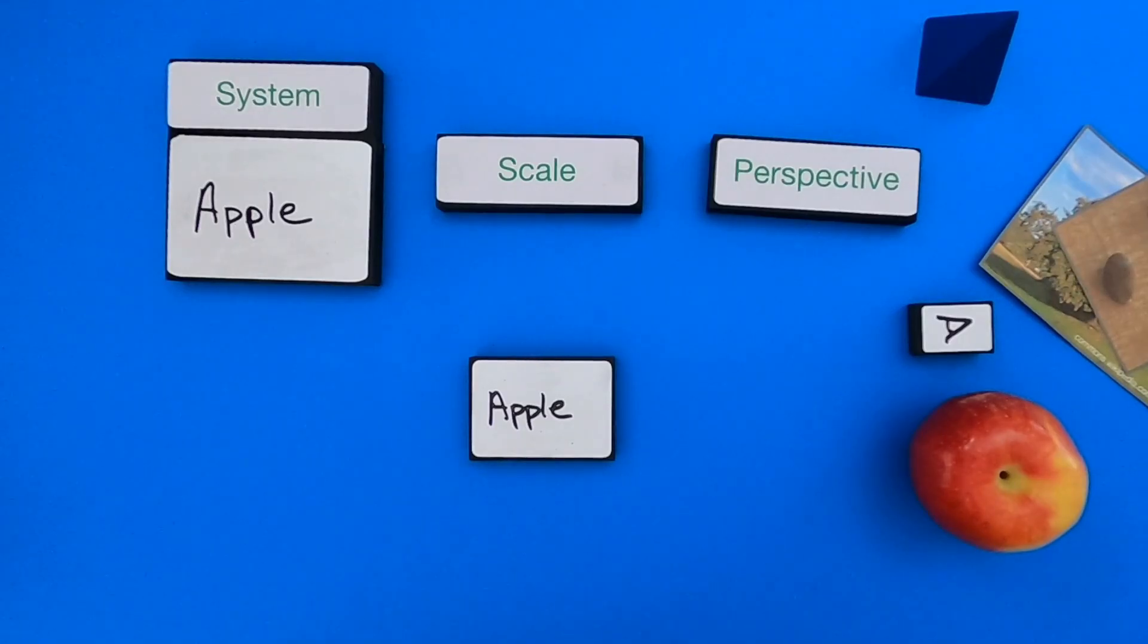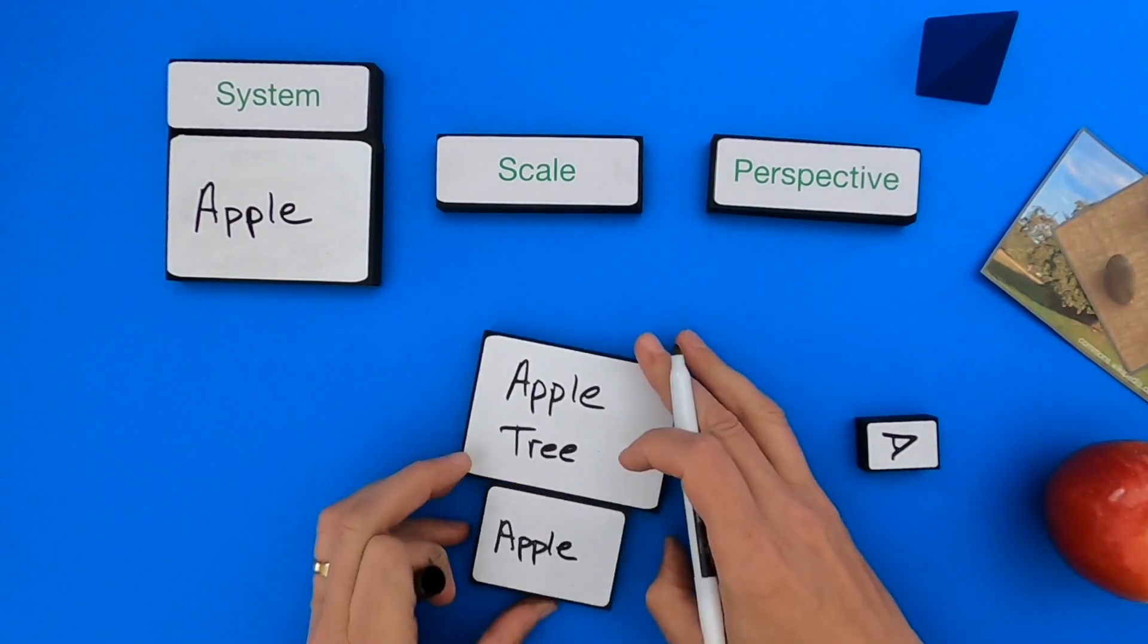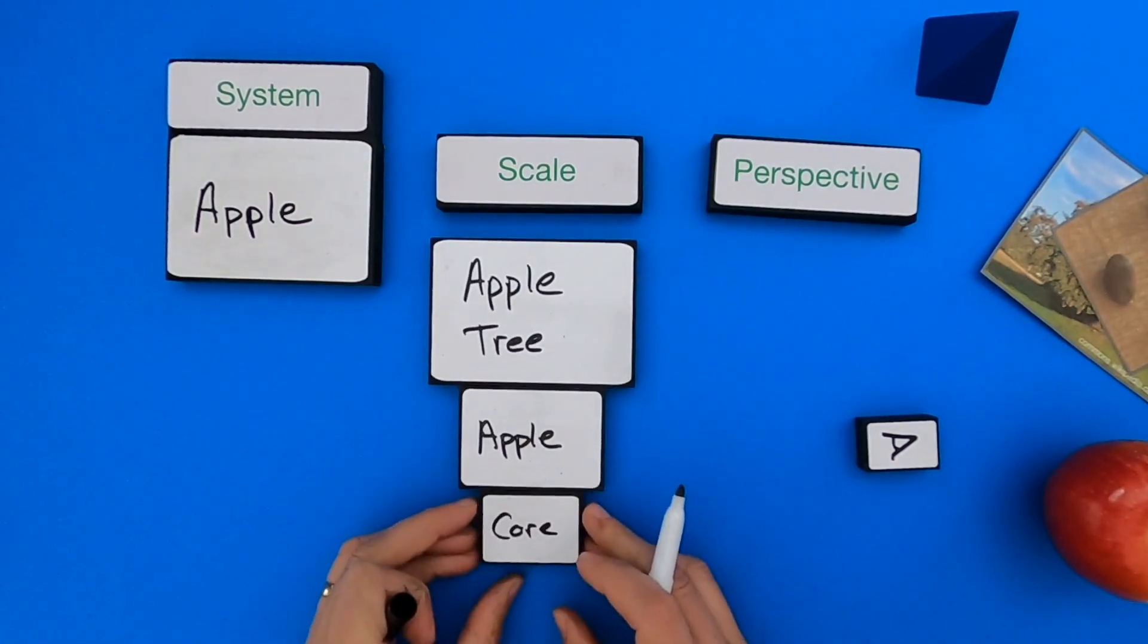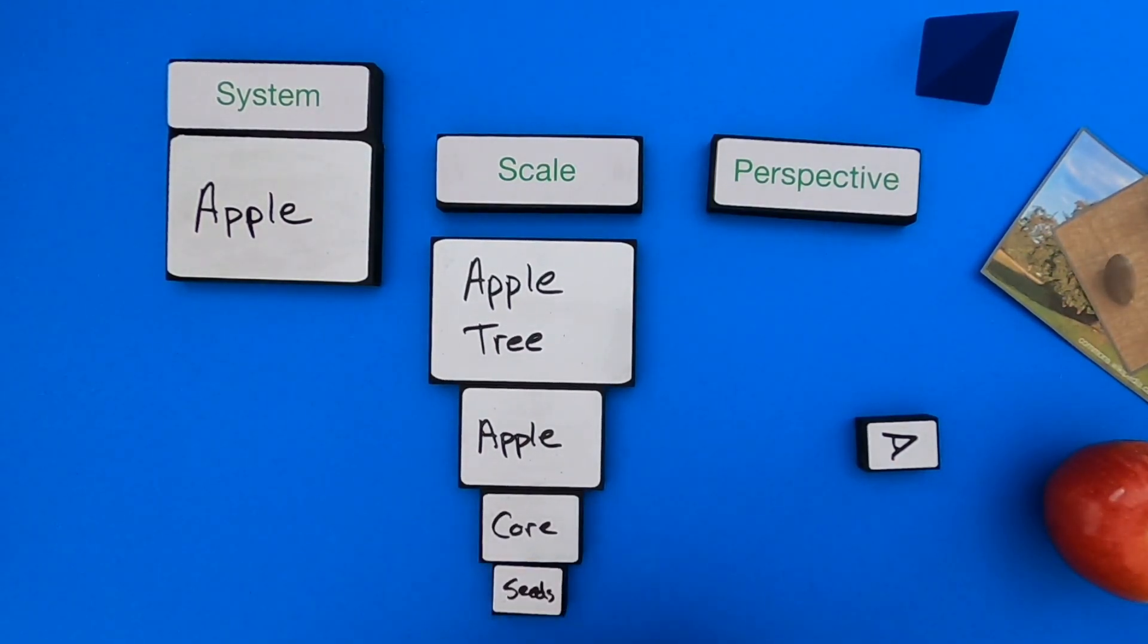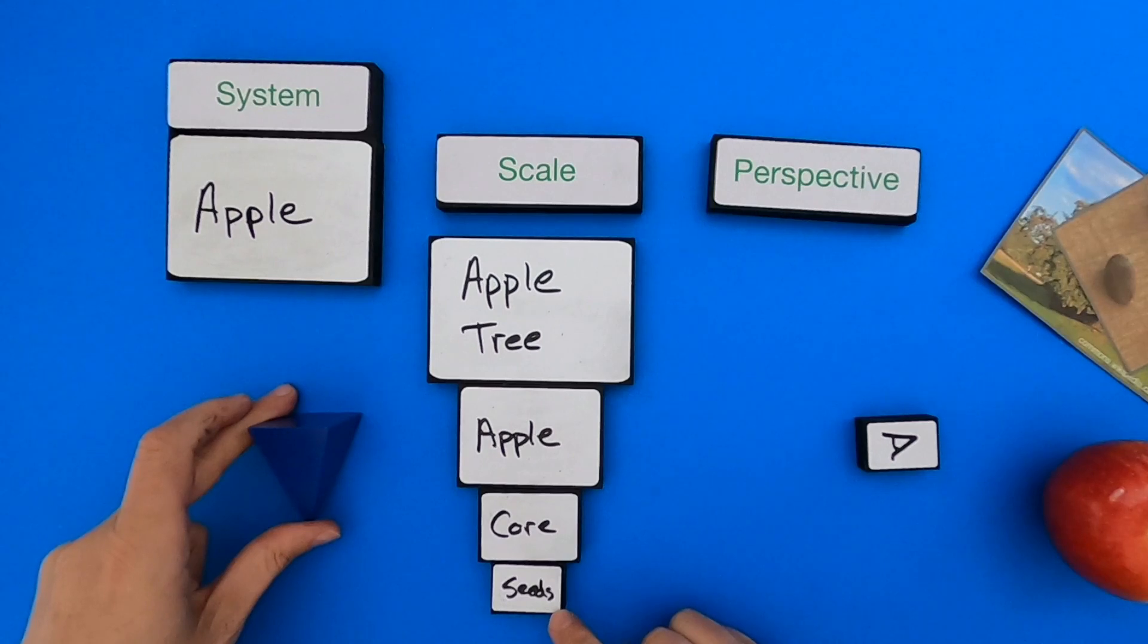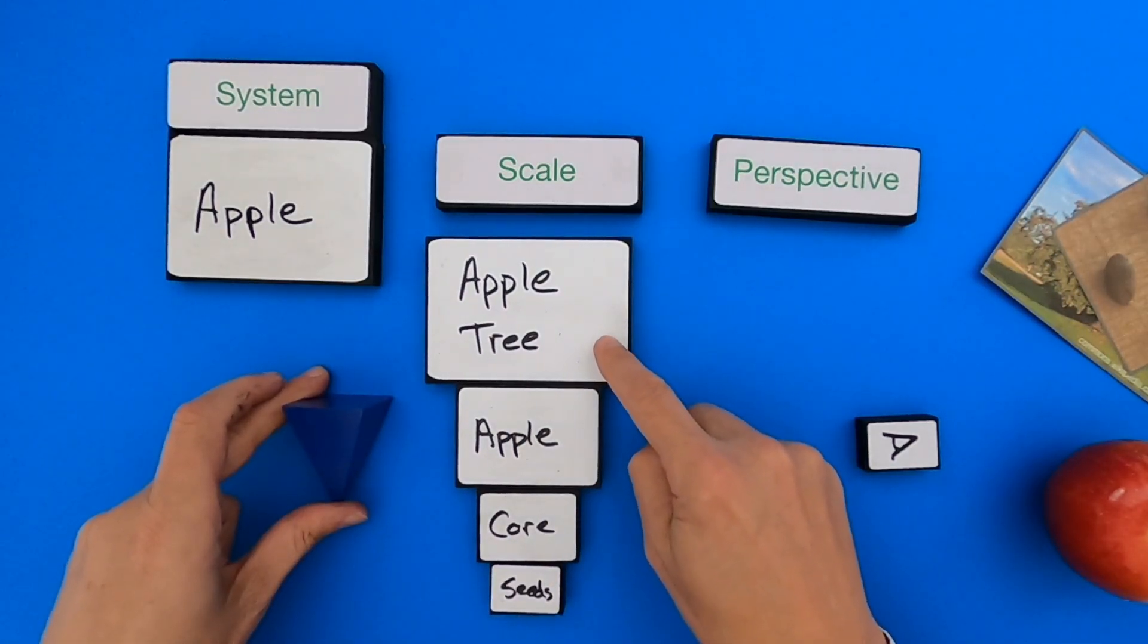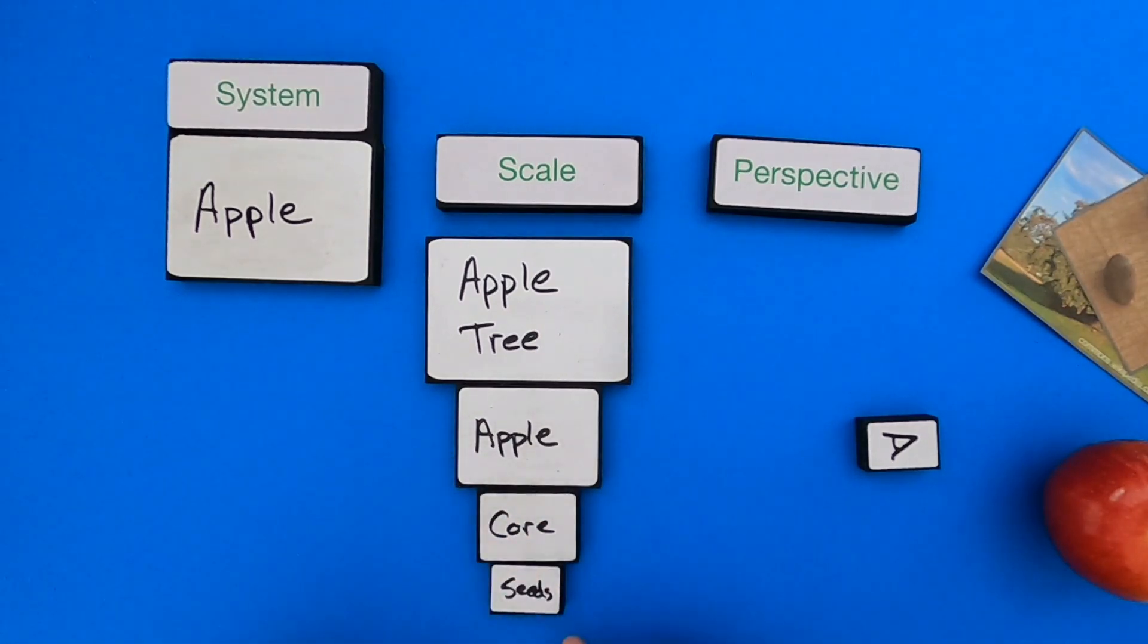All right, so hopefully you've done some thinking around this different apple system. First of all, let me define the different scales. So you can see I've set it from the apple to the apple tree, and then the apple contains the core which contains seeds. You can see the scale here. We're going from the very big or the larger hierarchy of systems down to the small.